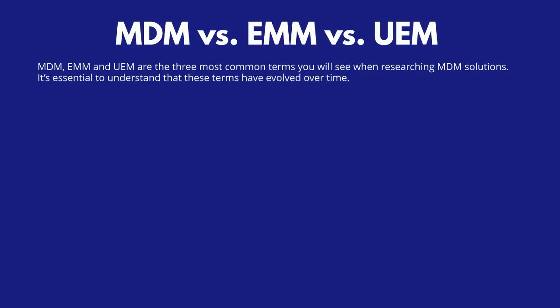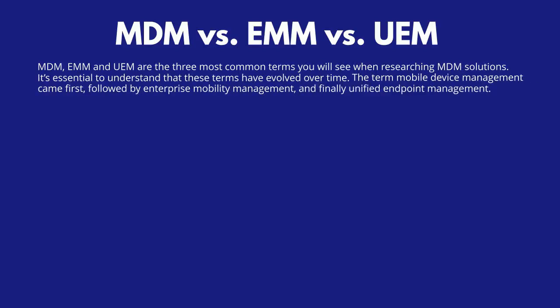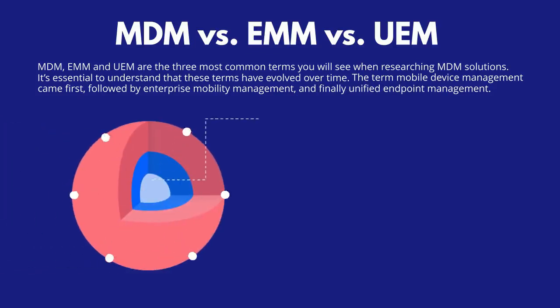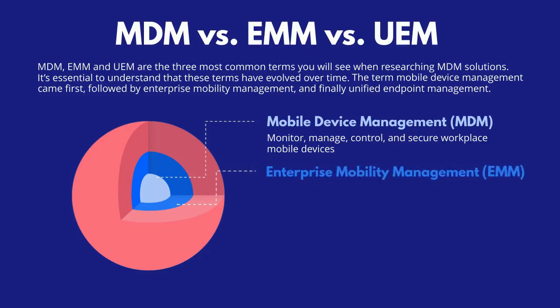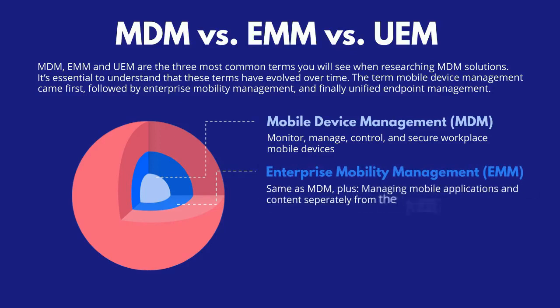It's essential to understand that these terms have evolved over time. The term mobile device management came first, followed by enterprise mobility management, and finally unified endpoint management. Mobile device management, MDM, is used to monitor, manage, control, and secure all workplace mobile devices. The term is a holdover from an era where cell phones didn't interface with any other devices in the office, so IT teams focused on managing office-owned phones separately. The term enterprise mobility management, EMM, represents managing mobile devices, applications, and content. EMM includes mobile device management (MDM), mobile application management (MAM), and mobile content management (MCM).